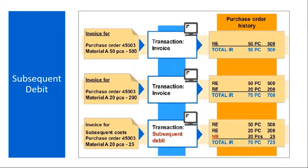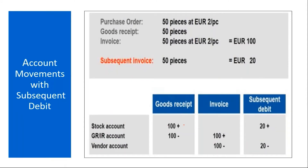Let's say you have a PO — Material A, 50 pieces ordered, amount is 500. You received it: 50 pieces, amount 500, invoice done, everything settled. Later on, he sends an extra invoice. That extra invoice you have to enter as a subsequent debit. Always remember, subsequent debit will show in the purchase order with NB as a separate line item.